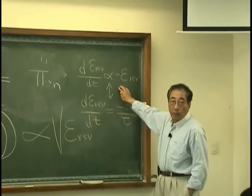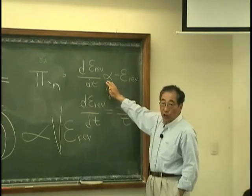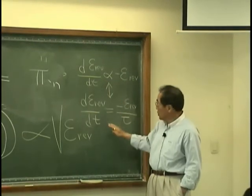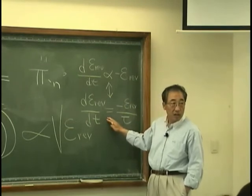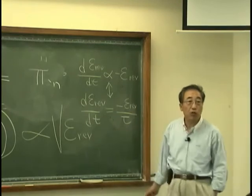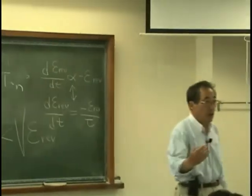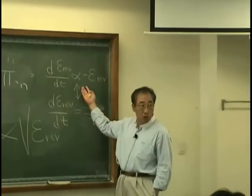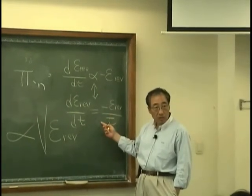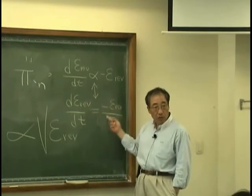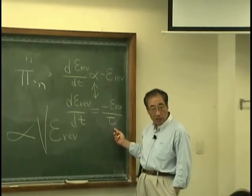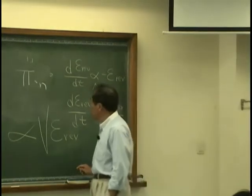This we agree. Then we want to change this proportionality to equality, then we can see that we need some time constant that we do not know yet, but from this logic, we can say that I can write this equation proportionality equation to equality by introducing time constant tau, then what does it mean?